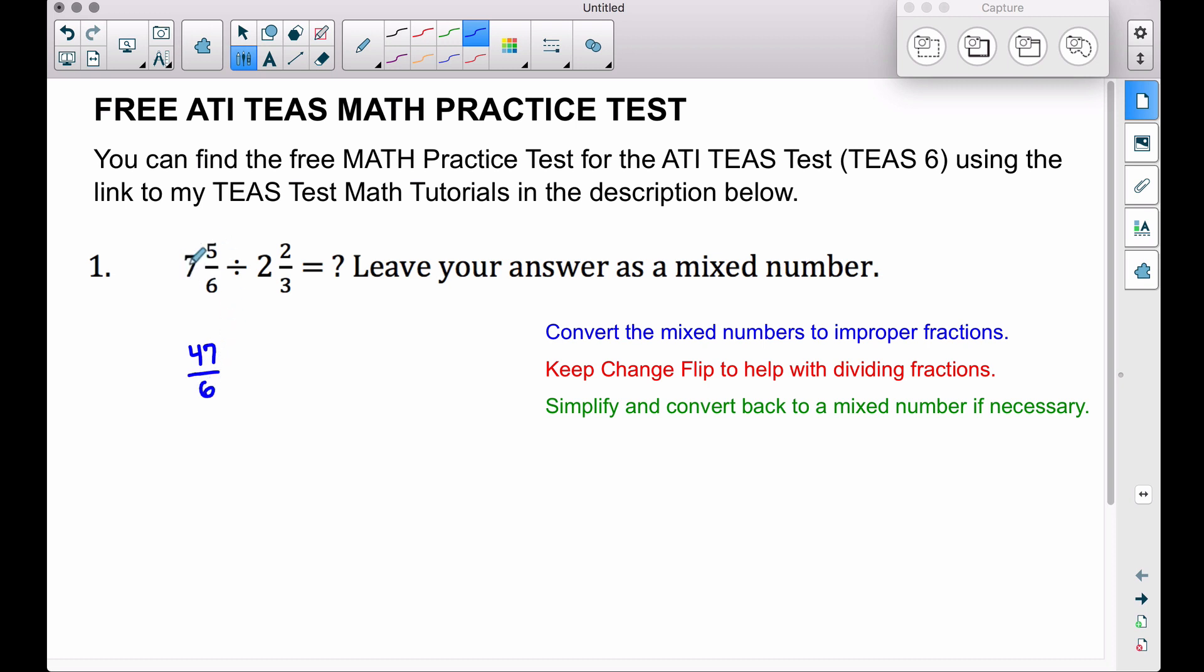This mixed number 7 and 5/6 is the same thing as 47/6, except now we have an improper fraction divided by 2 and 2/3. Let's do the same thing, taking our denominator 3 times 2 is 6, 6 plus that 2 gives us 8/3. And this is what we're trying to divide.